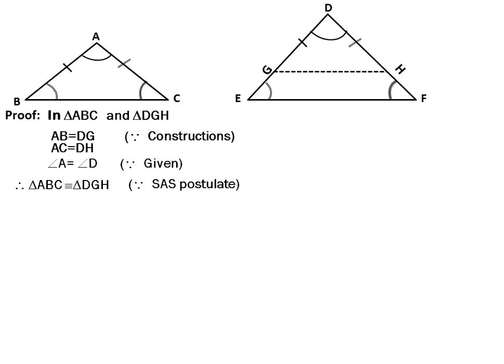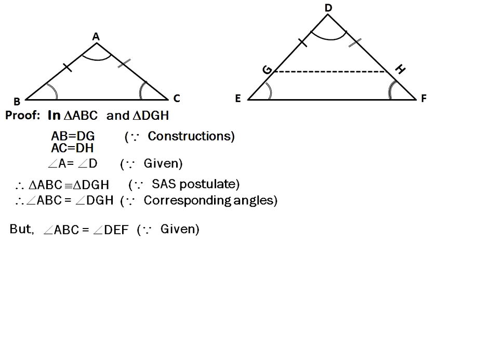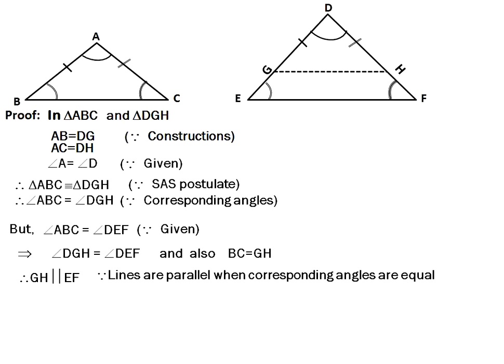Since the triangles are congruent, corresponding angles are also equal, so angle ABC equals angle DGH. But angle ABC equals angle E, which is given. This implies angle DGH equals angle DEF. Also, BC equals GH. Because GH is parallel to EF, and corresponding angles are equal — angle G equals angle E — we conclude that GH is parallel to EF.